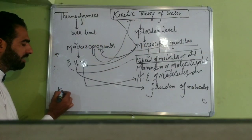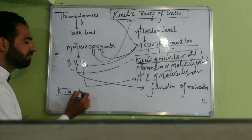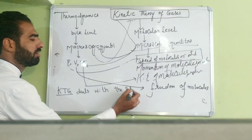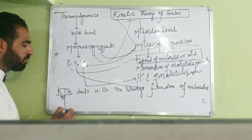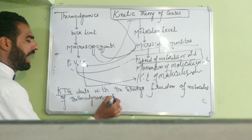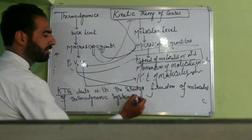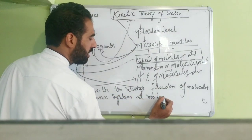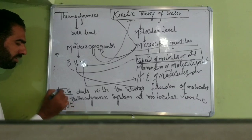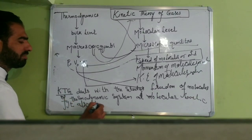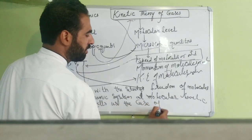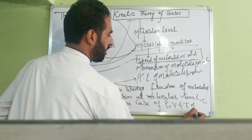KTG deals with the study of energy change. KTG deals with the study of a thermodynamic system at the molecular level. KTG also tells us the cause of pressure, volume, and temperature of a gas — why gas exerts pressure, why gas occupies the whole volume, why gas possesses certain temperature.